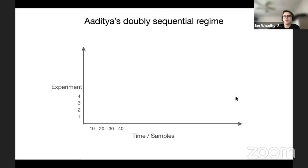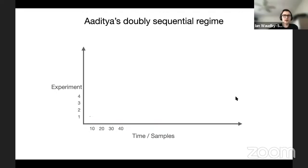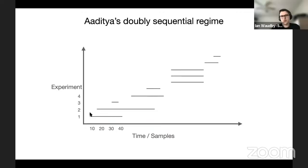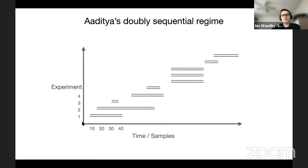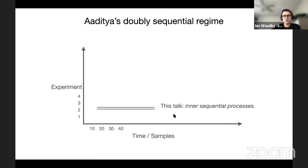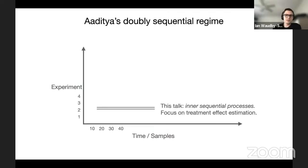For context, Aditya gave a talk about three weeks ago on the doubly sequential regime. In that talk, he discussed a sequence of sequential experiments — experiments that start and stop over time, possibly asynchronously. When I say sequential in this talk, I'm talking about one of those inner processes — one of those inner sequential experiments — focused on treatment effect estimation in sequential experiments or sequential observational studies.